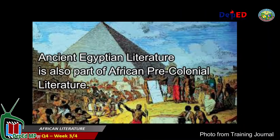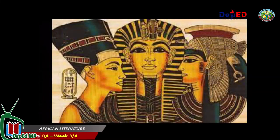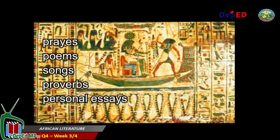The literature of Egypt is often studied separately from the context of African literature. But since Egypt is part of Africa, we will include a little bit of Egyptian literature here. The accounts from the Egyptian hieroglyphics are actually among the earliest written literature in the world. We know some stories about pharaohs and Egyptian gods and deities. These ancient writings also have many prayers, poems, songs, and proverbs, and even personal essays.